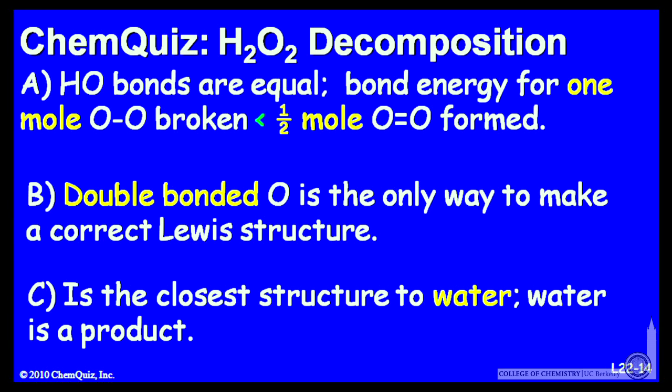Let's look at a possible explanation for each answer. A, HO bonds are equal on both sides, and the bond energy for one mole of O single bond broken is less than half a mole of O double bonds formed. Or B, double bonded O is the only way to make the correct Lewis structure. Or C, C is the closest structure to water, and water is formed as a product. So think about those three explanations and make a selection.